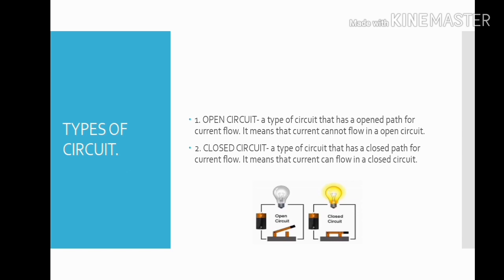Number 2, Closed Circuit: a type of circuit that has a closed path for current flow. It means that the current can flow in a closed circuit. Here are two examples of open circuit and closed circuit.